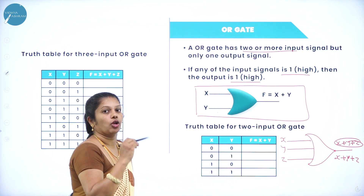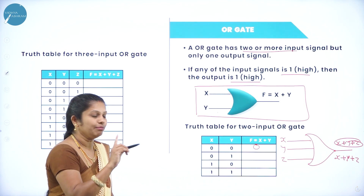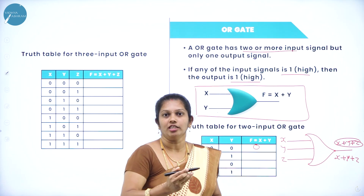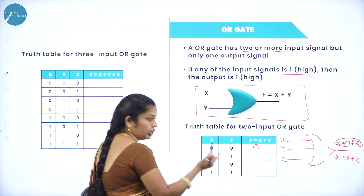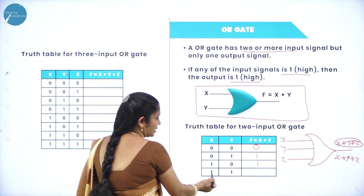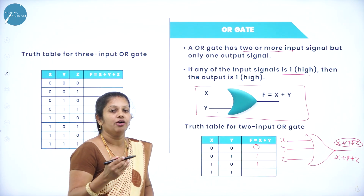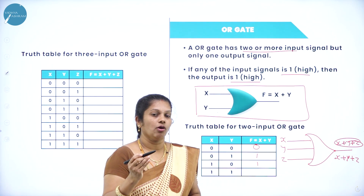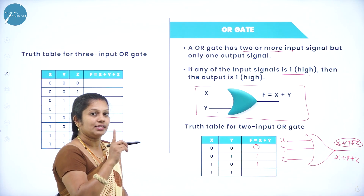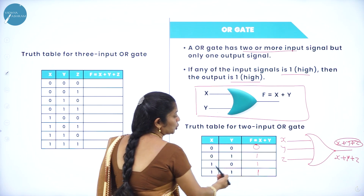Looking at the truth table for OR gate with two variables: 0 + 0 — all inputs are 0, so output is 0. Second case 0 + 1 — one input is 1, so output is 1. Third case 1 + 0 — output is 1. Last case 1 + 1 — all inputs are true, output is 1. Note that here 1 + 1 in binary context still gives output 1 because any true input makes output true.